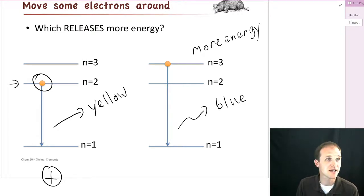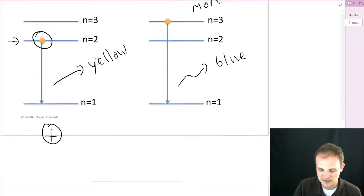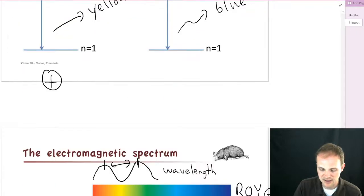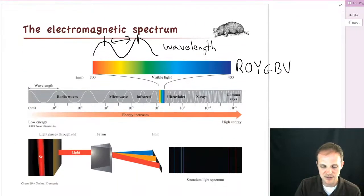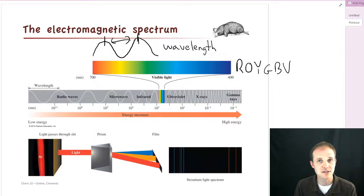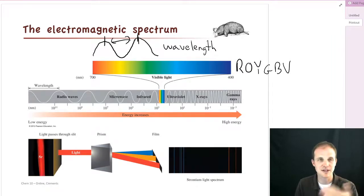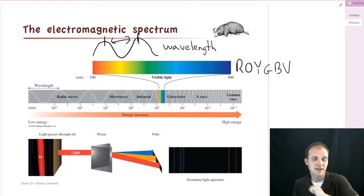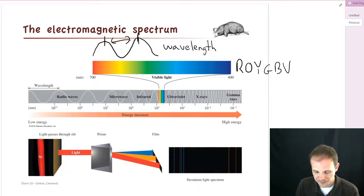What you need to know is to be familiar with radio, microwave, infrared, visible, ultraviolet, x-rays, and gamma rays — in that order in terms of energy. And you need to be familiar with the relationship that the shorter the wavelength, the higher the energy. All right, thanks so much.